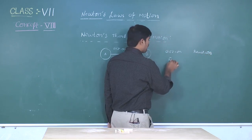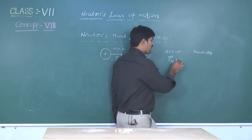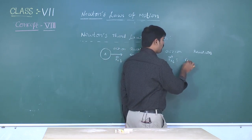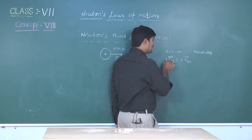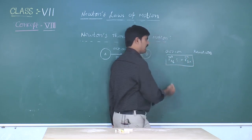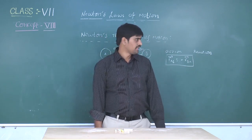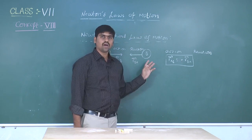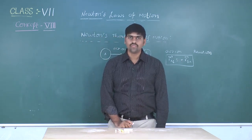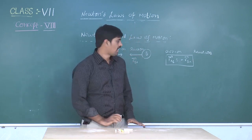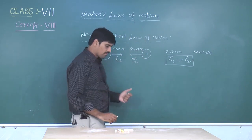That means, F_AB has the same magnitude as the force exerted by B on A, but opposite in direction. From this, what we understand is the force always exists in pairs. A single isolated force does not act. There are many examples for this.